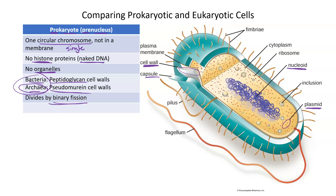Prokaryotes divide by binary fission, while eukaryotes divide by mitosis. The difference in division method comes down to whether there is a nucleus or not. If there's a nucleus, you need to divide that nucleus before you divide the cell — that's the biggest difference between mitosis and binary fission. Most prokaryotes, because they lack a nucleus, can simply replicate that chromosome and then split themselves in half.